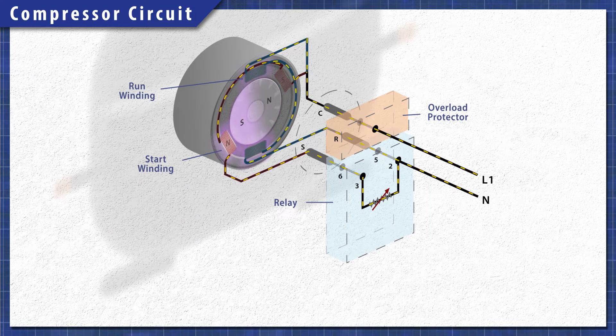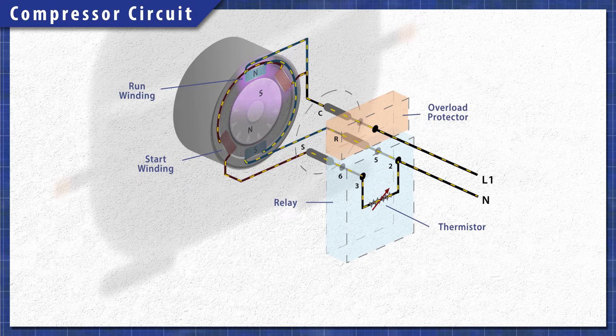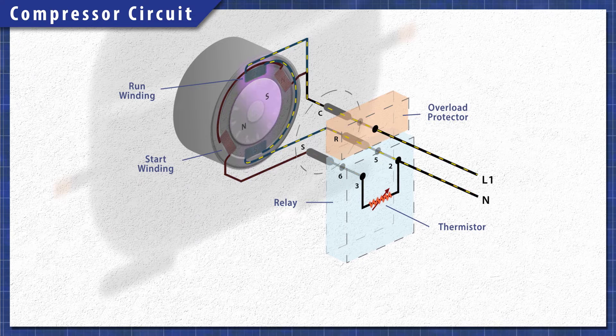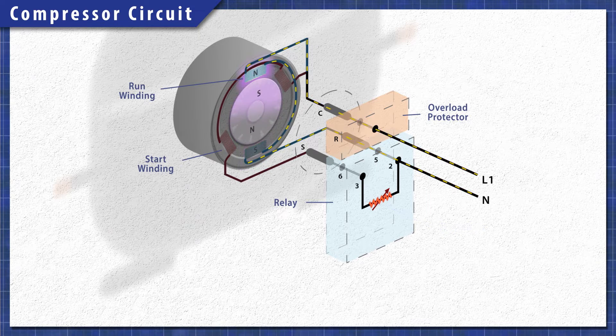Many refrigerators use a relay with a PTC thermistor. This heat sensitive resistor acts like a switch. As the motor starts, the thermistor heats up and disconnects power to the start winding. This prevents it from overheating.